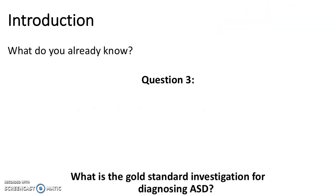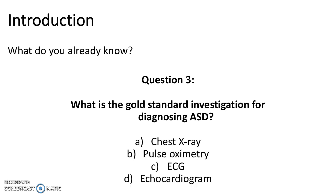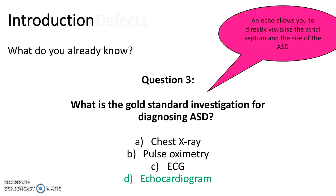Question 3. What is the gold standard investigation for diagnosing ASD? Is it A. Chest x-ray, B. Pulse oximetry, C. ECG, or D. Echocardiogram? The answer is echocardiogram. An echo allows you to directly visualise the atrial septum and the size of the ASD.